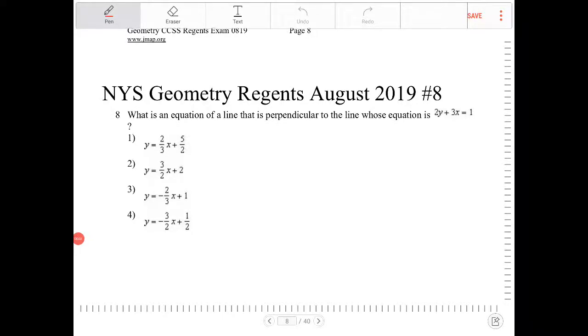What is an equation of a line that is perpendicular to the line whose equation is 2y plus 3x equal to 1?